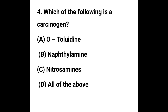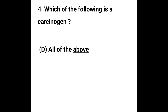Question number 4. Which of the following is a carcinogen? Option A - Orthotoluidine, Option B - Naphthylamine, Option C - Nitrosamines, Option D - All of the above. The correct answer is Option D, All of the above.